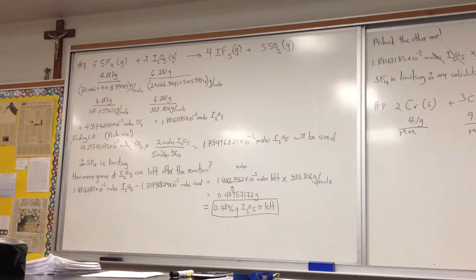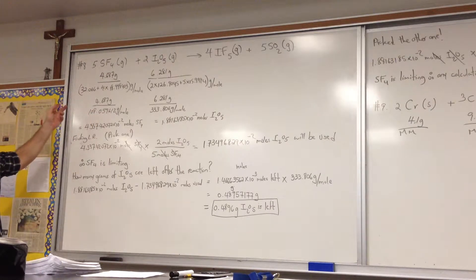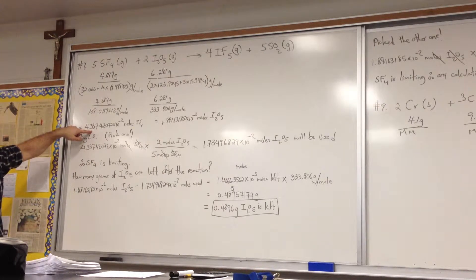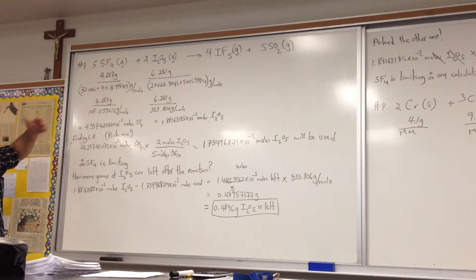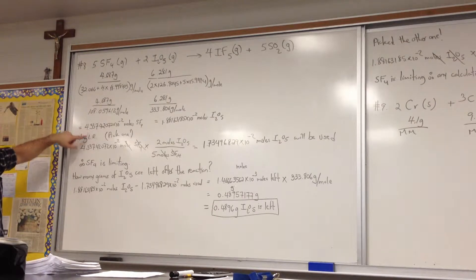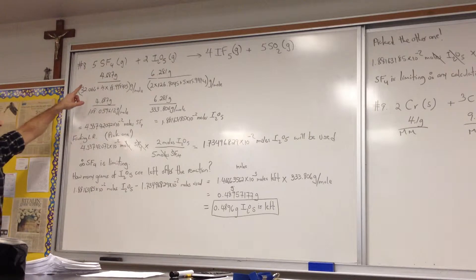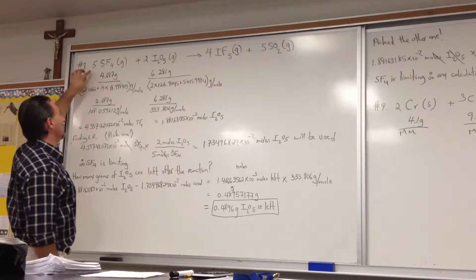The next step in the calculation is to find the limiting reagent. I'm going to pick one of these two chemicals — it doesn't matter which one I pick as long as I follow the procedure correctly. I picked sulfur tetrafluoride because I had a hunch it would be the limiting reagent just by looking at the numbers. Even if I did pick the wrong one, it won't matter. I did the calculation using the stoichiometry of the balanced equation, and I did check to make sure that the equation was balanced.